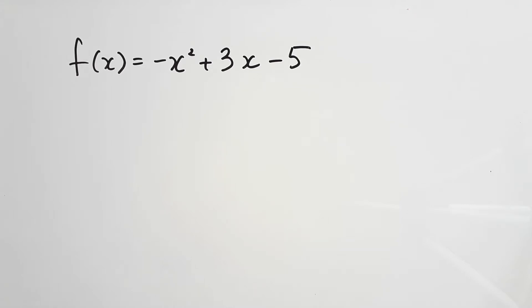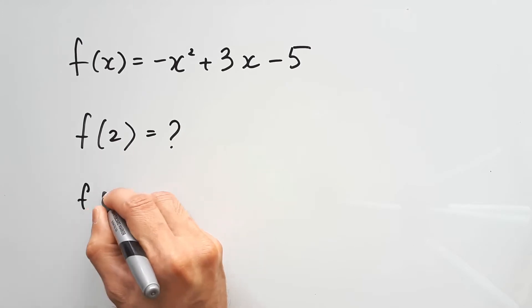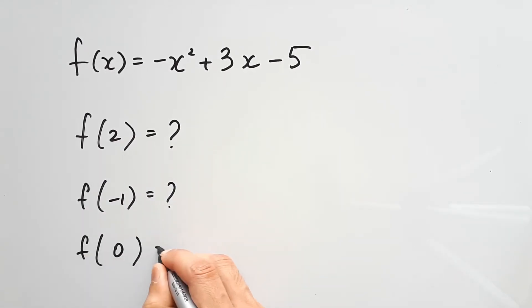Okay, so here is a function f(x) equals negative x squared plus 3x minus 5. And here are some examples of stuff that you can be asked to find: f of 2, f of negative 1, f of 0.